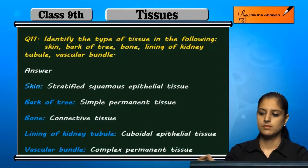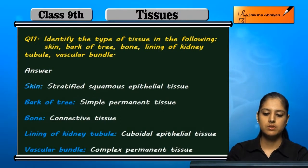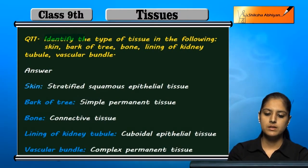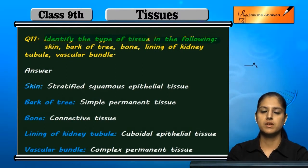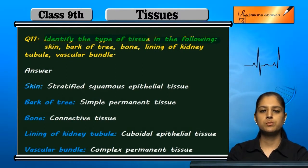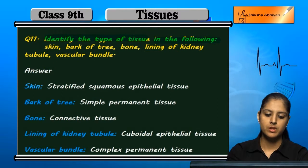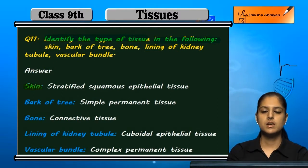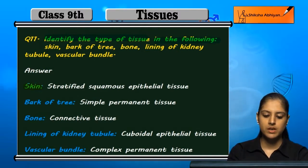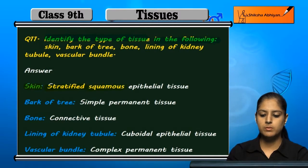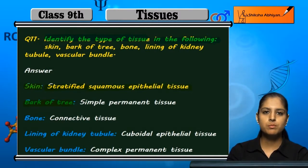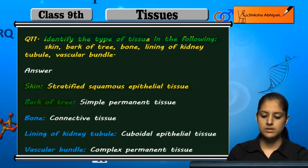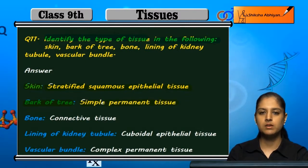Question 11: Identify the type of tissue in the following. Skin is stratified squamous epithelial tissue. Tree bark is a simple permanent tissue.